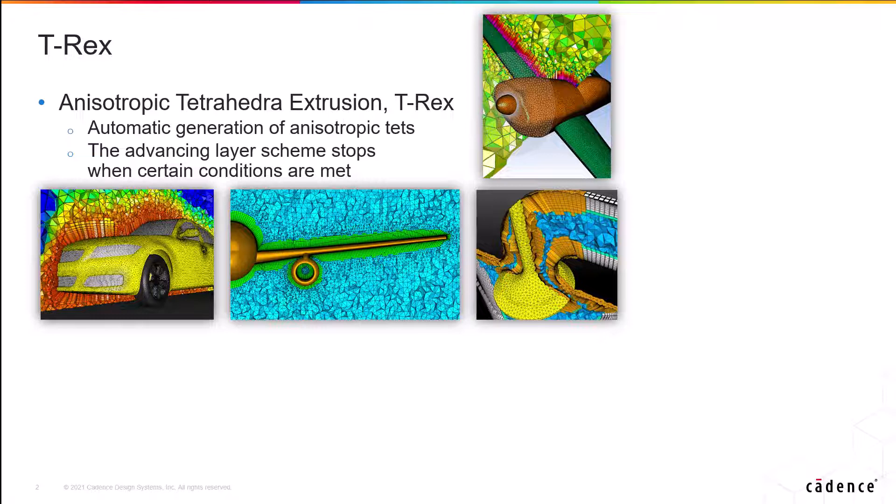The T-Rex algorithm starts with a watertight front consisting of triangles and quads and marches one layer at a time, performing several calculations and quality checks for each layer.